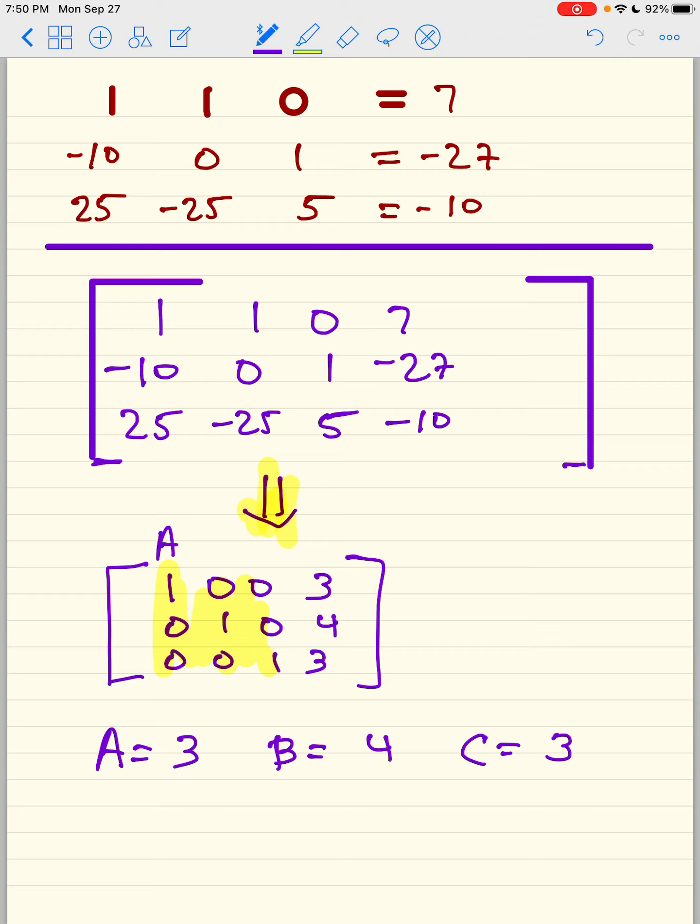Well, this was my A, this was my B, this was my C, or this was my A, this was my B, this was my C. Therefore, A equals 3, B equals 4, and C equals 3.